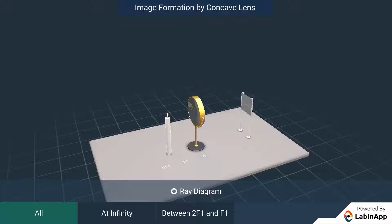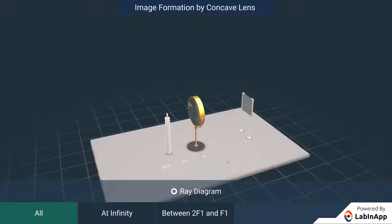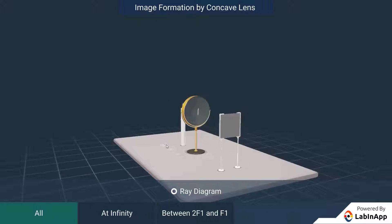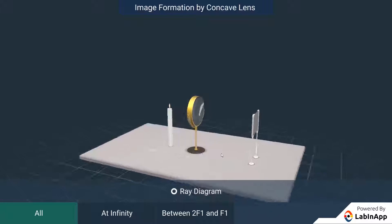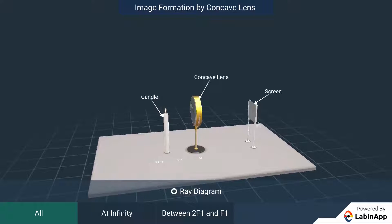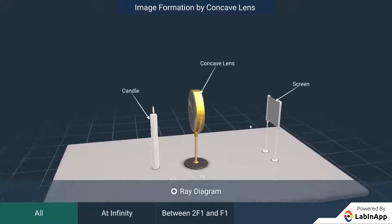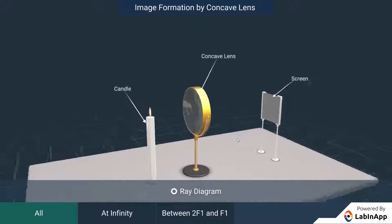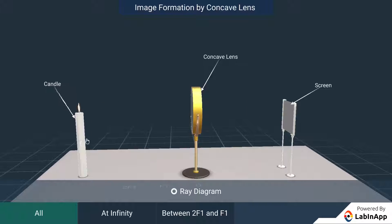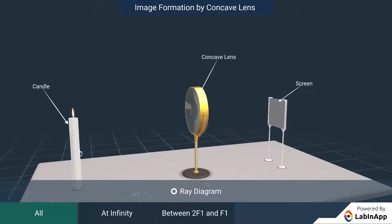Let's study the image formation of a concave lens for different positions of the object from it. A concave lens, a candle and a paper screen to capture the image are kept on a horizontal surface as shown. Move the candle and observe the image in the lens and on screen.